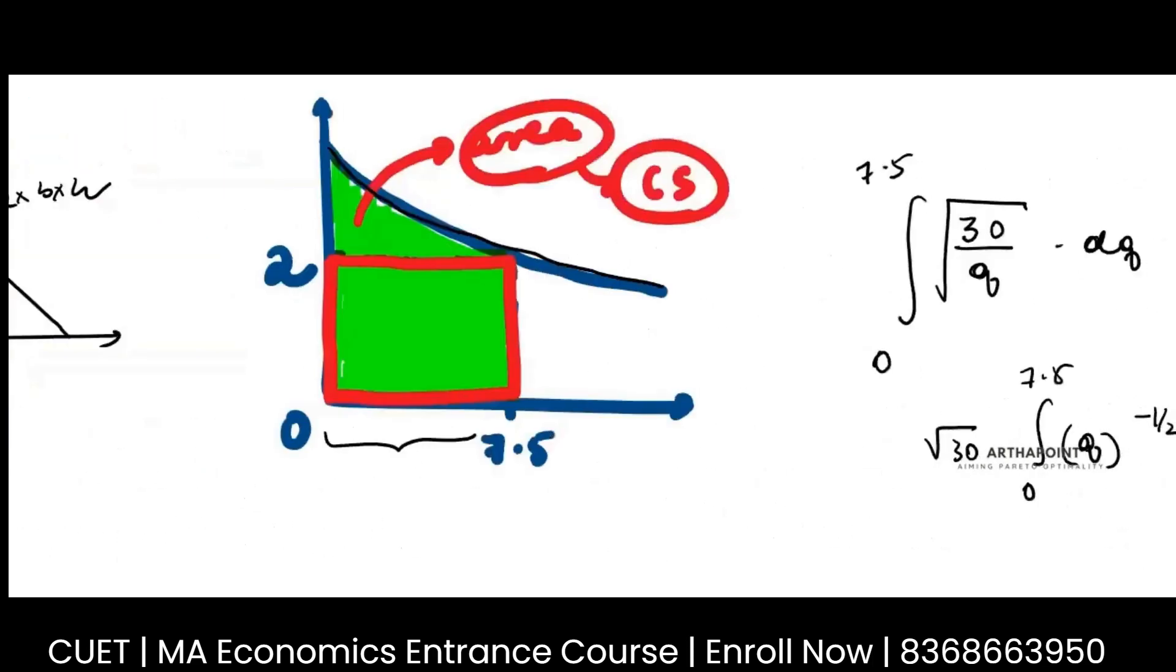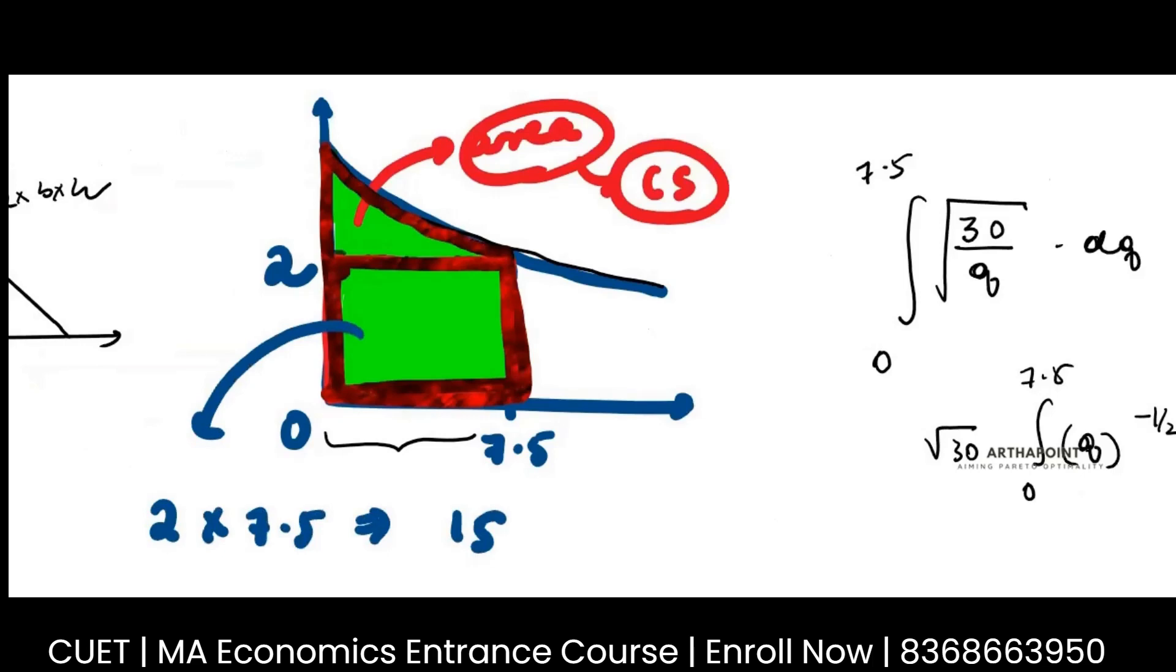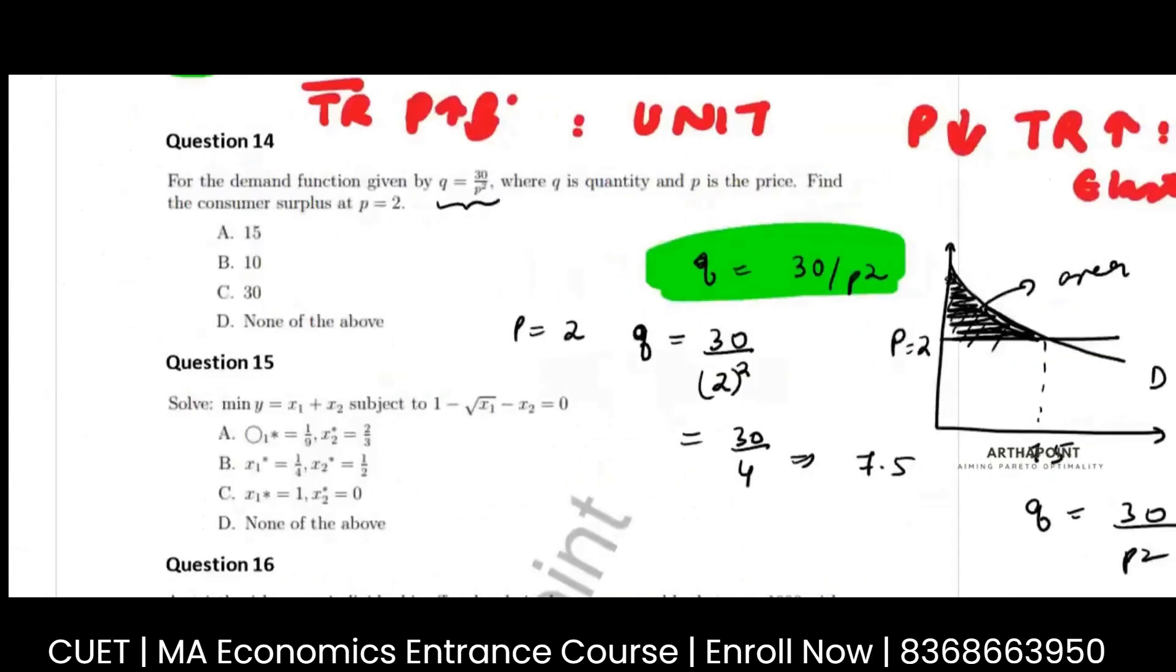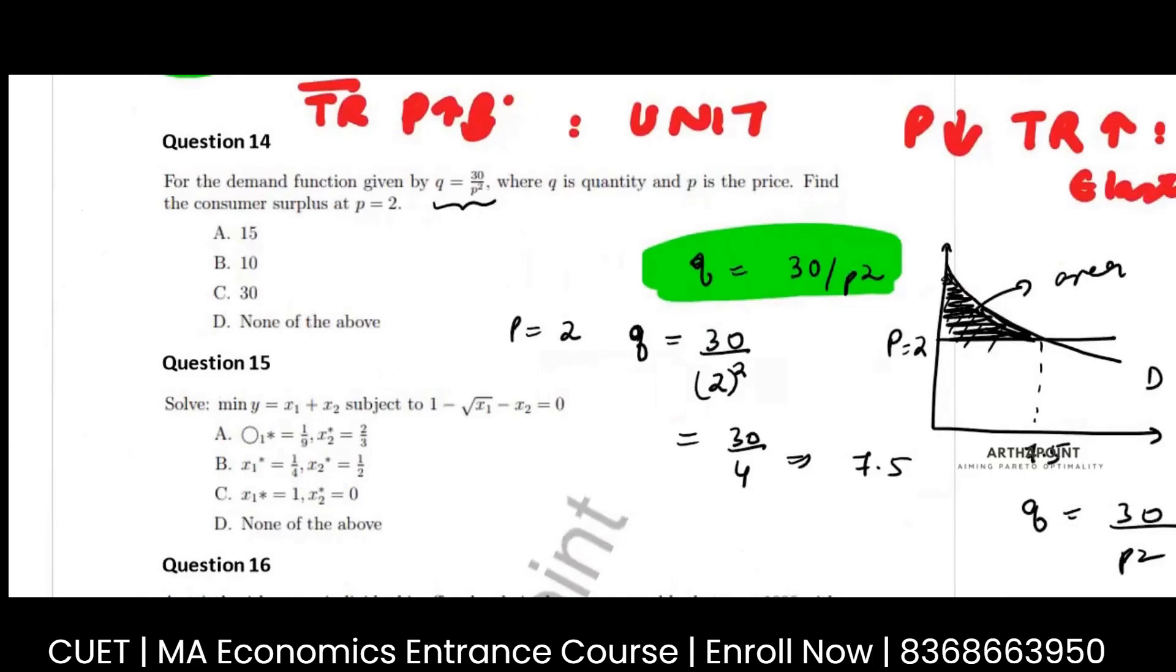So just see, this is the area under the curve that I am getting as 30. Now I have to subtract this area and this area will be 2 into 7.5 which will be 15. 30 minus 15 is 15. So my consumer surplus, which is this, it will be 15. So my answer to this question will be 15.